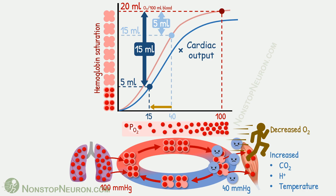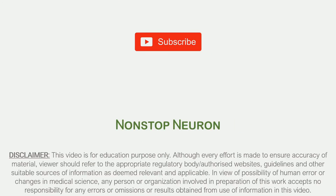This was all about changes in the oxygen hemoglobin dissociation curve during exercise. You can watch other videos on respiratory physiology from the channel page. Links are mentioned in the description. Also follow me on other social media platforms. If you are new here, subscribe to get more videos. Thanks for watching.